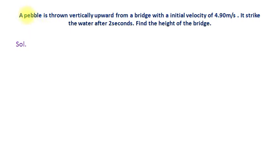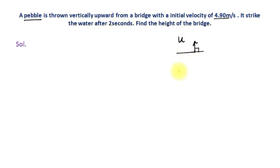The first numerical: a pebble — that is, a stone — is thrown vertically upward from a bridge. The angle of projection is 90 degrees with an initial velocity of 4.9 meters per second. It strikes the water after 2 seconds. We need to find the height of the bridge. The water level is below the bridge.